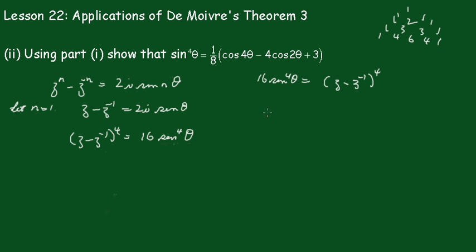So this equals Z^4 minus 4Z^3·Z^(-1) plus 6Z^2·Z^(-2) minus 4Z·Z^(-3) plus Z^(-4).